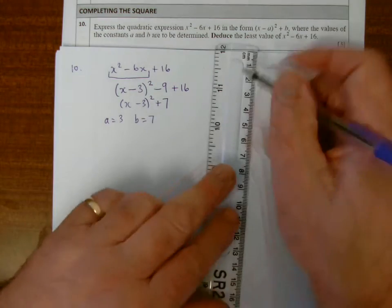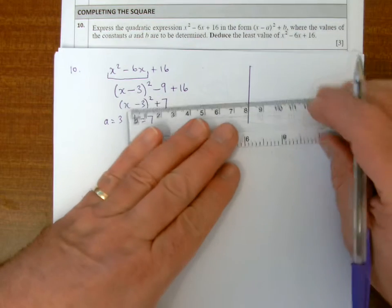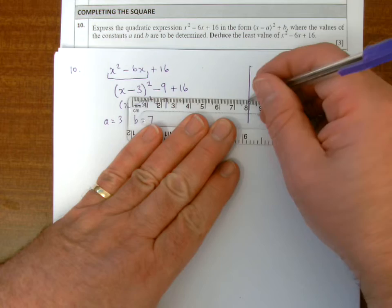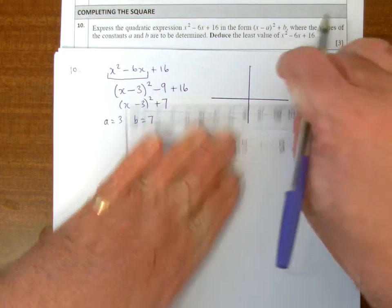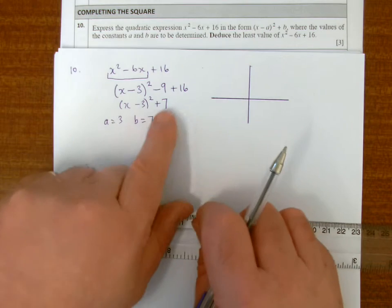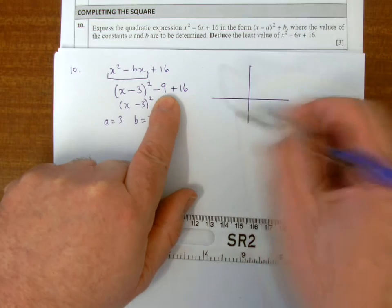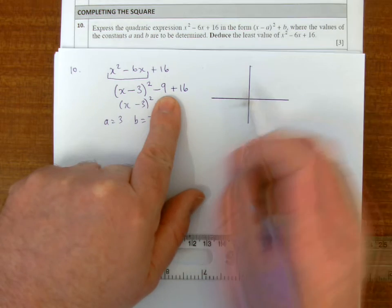And to do this, I'm going to sketch what I've got, and then it's easy to see what the lowest value is. So if I sketch x minus 3 all squared plus 7, x squared, I know is just a sort of u-shaped graph that passes through the origin.